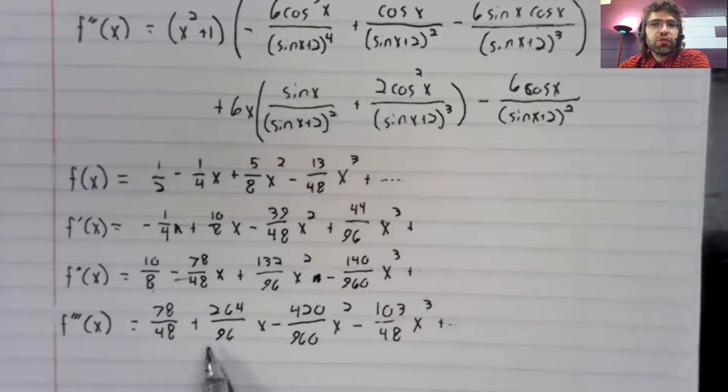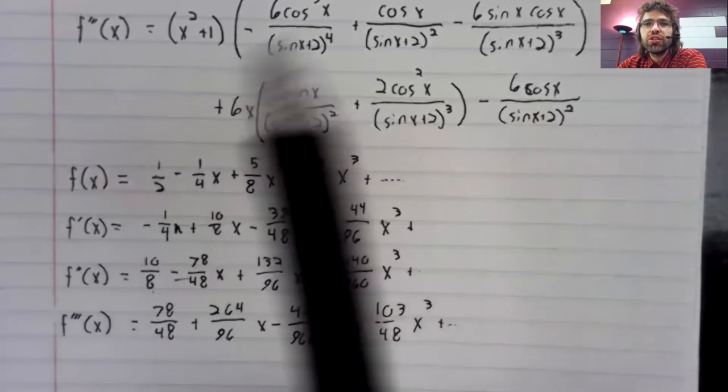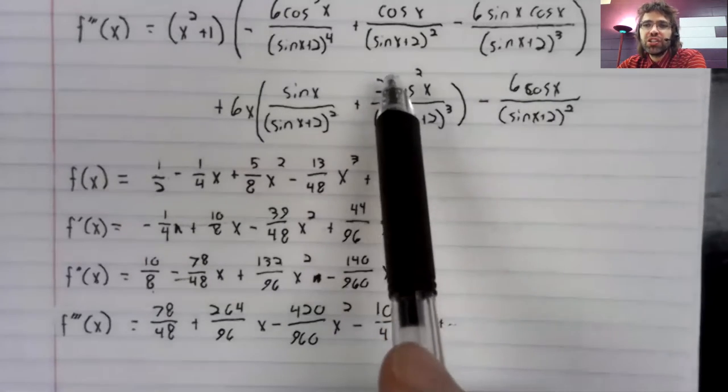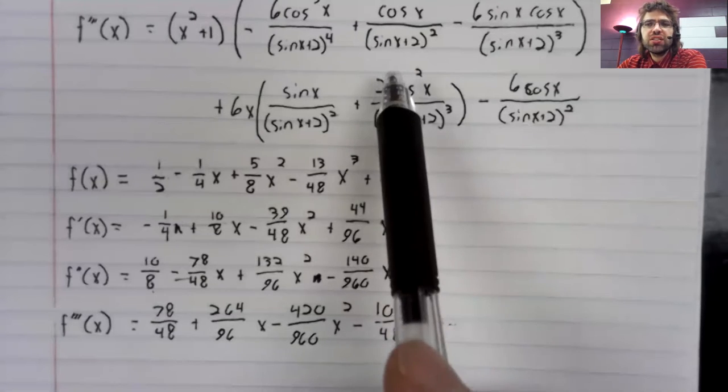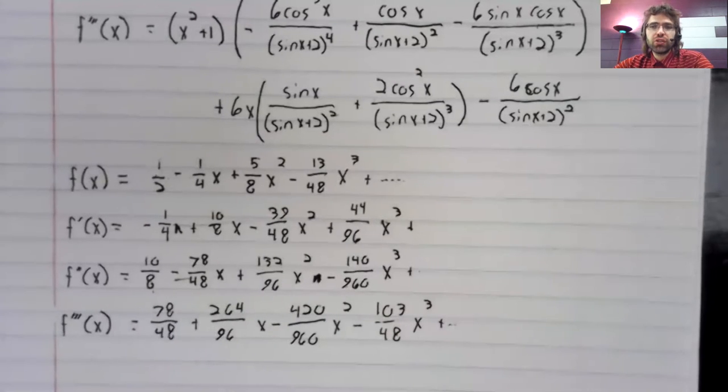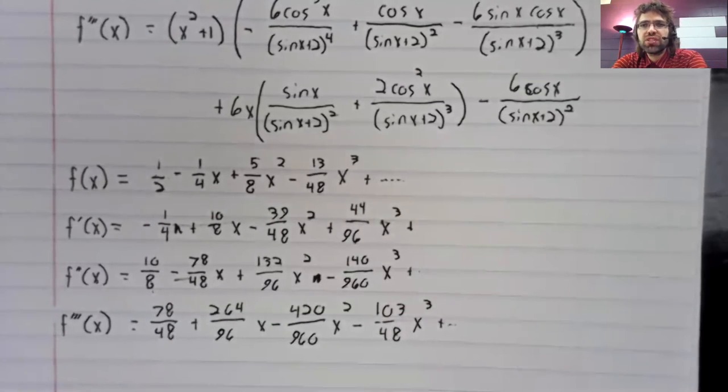In particular, since this power series converges, these terms are going to zero. So if you keep a finite number of terms, if you keep 10 terms maybe, that's going to be a really good approximation of this, at least close to the center of the power series.